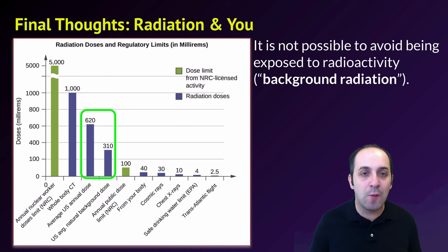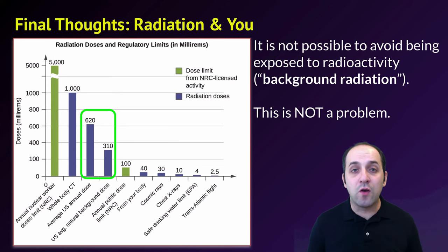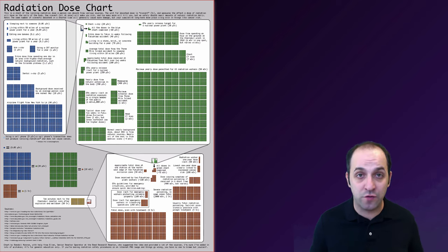But you can see that that annual amount is considerably lower than the amount that you would get from a whole body CAT scan, which is itself five times lower than the amount that a nuclear worker or somebody who works around nuclear technologies like at a nuclear power plant would be exposed to. In other words, this is not a problem. The issue comes when you're exposed to additional sources of radiation.